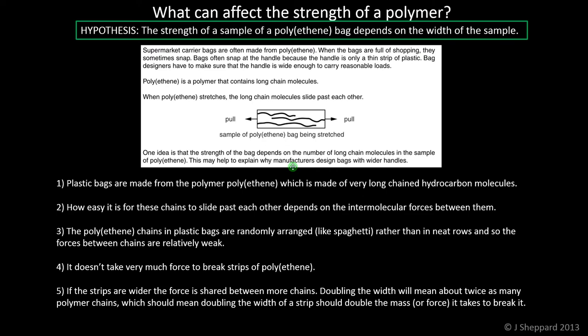That means it doesn't take very much force to break strips of polythene. The important point for relating to the hypothesis is that if the strips are wider, then there are more polymer chains in the strip, and the force is going to be shared between more of the chains. Doubling the width of the strip should mean twice as many polymer molecules, which should mean doubling the width should double the mass or force it takes to break it, because the force will be spread across twice as many molecules. That's the key point you should try to talk about.